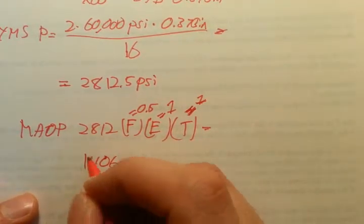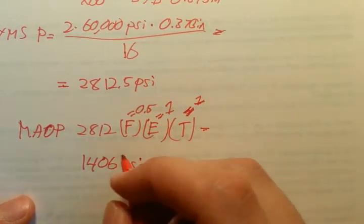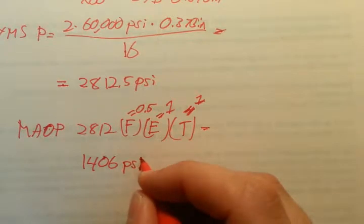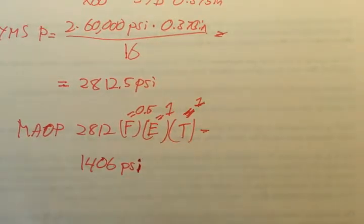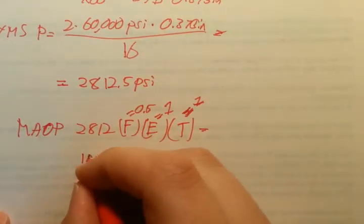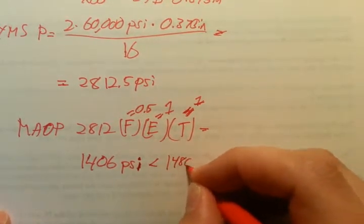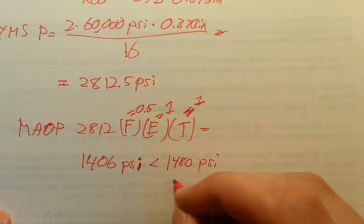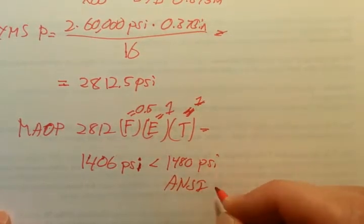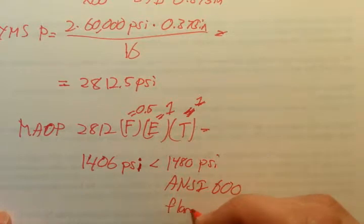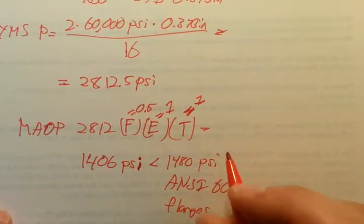So that is for this 16 inch pipeline, that is the maximum allowable operating pressure that DOT wants you to operate at. And that makes sense because that's just below 1480 PSI, which is ANSI 600 maximum rating for flanges and components and valves.